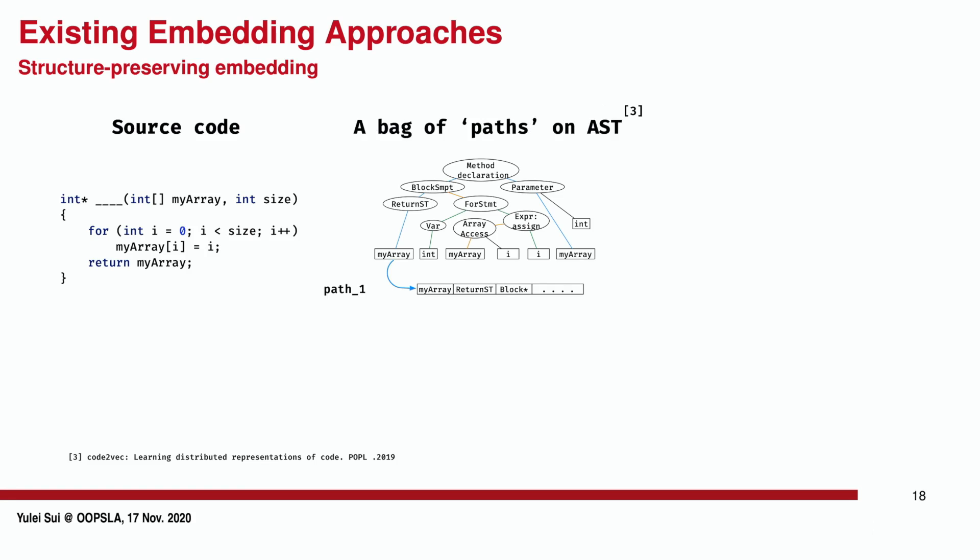A typical work is code-to-vec, which represents code semantic using a bag of paths on the AST of a program. The path here is an analogy to sentence in word embedding. In such a way, it can capture the relationship between two tokens in a structured manner. The more sound and precise structural information is preserved, the more effective the code vector can be.